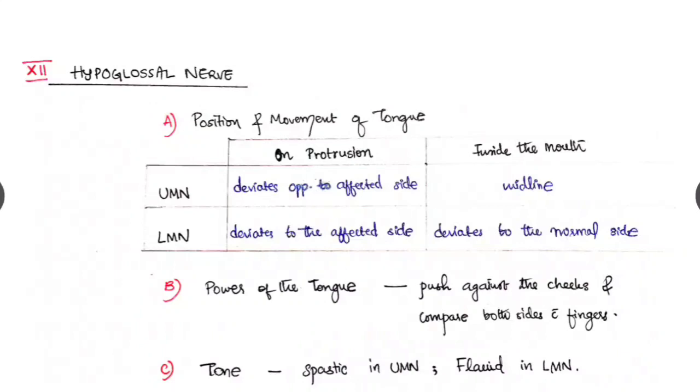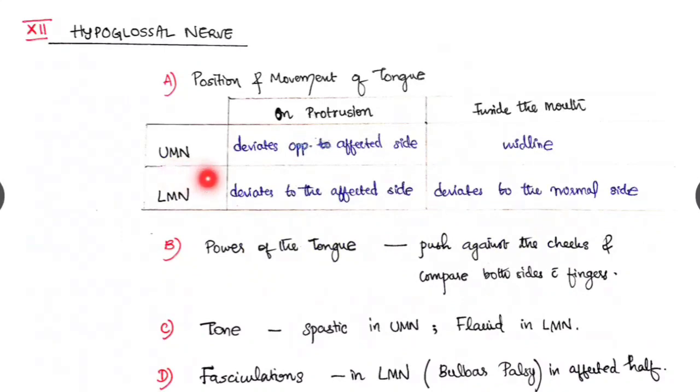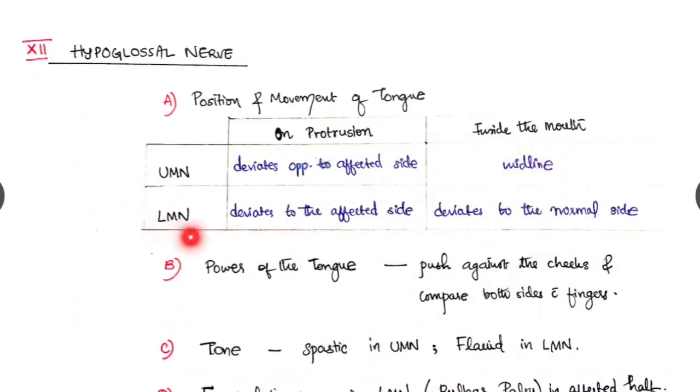And finally the hypoglossal nerve. The position and movement of the tongue we have to look. In UMN palsy, the position of the tongue on protrusion, the tongue deviates opposite to the affected side. And while inside the mouth the tongue will be in the midline position. In LMN palsy, on protrusion the tongue deviates to the affected side. And while inside the mouth the tongue deviates to the normal side. And this is how we distinguish whether it is UMN palsy or LMN palsy with the position of the tongue.